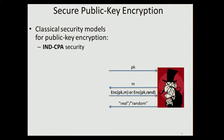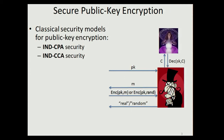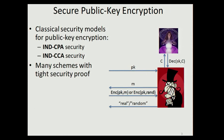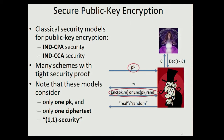One classical security model for public key encryption is IND-CPA security — indistinguishability under chosen plaintext attacks. The security experiment starts with a public key given to the adversary. The attacker selects a message and receives back a challenge ciphertext which either encrypts this message or an independent random value, and the attacker's task is to tell which. A stronger security model is IND-CCA security, which is identical except the attacker has access to a decryption oracle that decrypts any ciphertext except the challenge ciphertext.